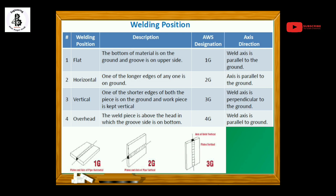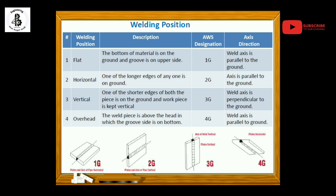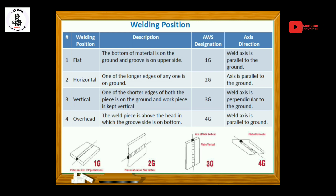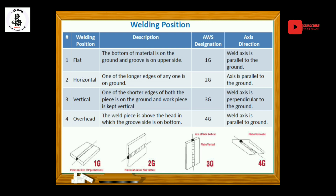The last and most difficult welding position is the 4G position — overhead welding. The weld piece is above the head with the groove side on the bottom, and the weld axis is parallel to the ground. The overhead position has the highest difficulty level, whereas 1G and 2G are normal levels where you can easily perform welding using flat and horizontal positions.